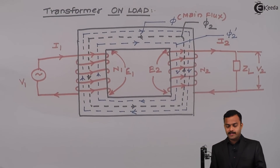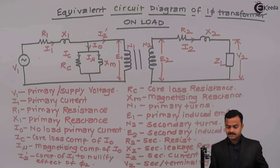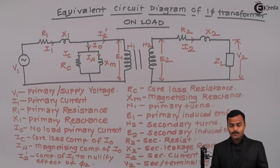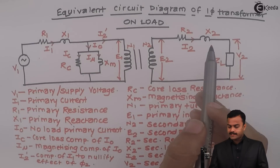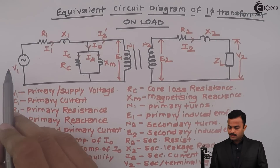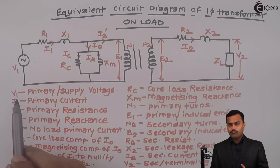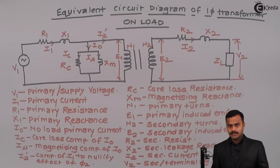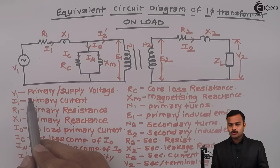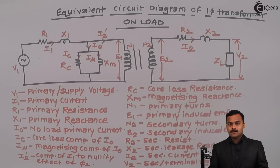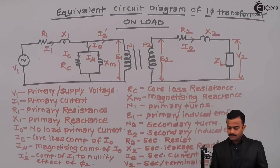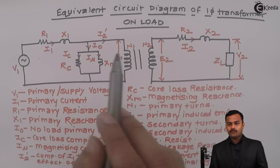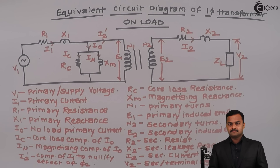All these effects when the transformer is loaded are taken care of by this equivalent circuit diagram, which has so many parameters. My advice is that whenever you have to draw and remember all this, go from V1 to V2 — V1 should be the first quantity and V2 should be the last, because whenever we are going to draw a phasor diagram, there will be a logical order for the different phasors, all depending upon this list and some KVL and KCL equations. Thank you.